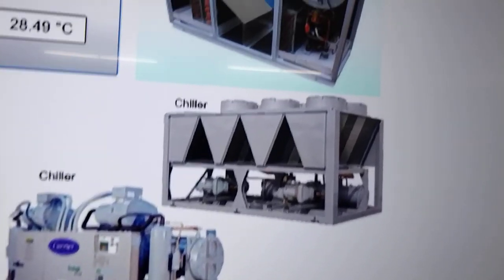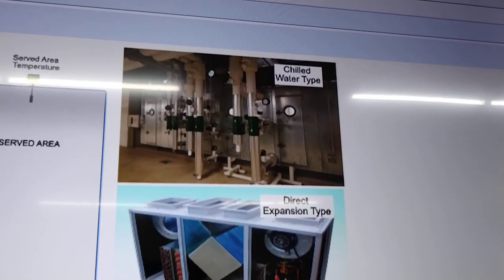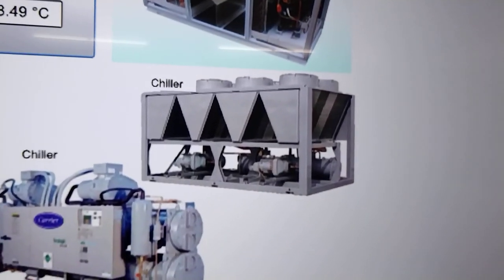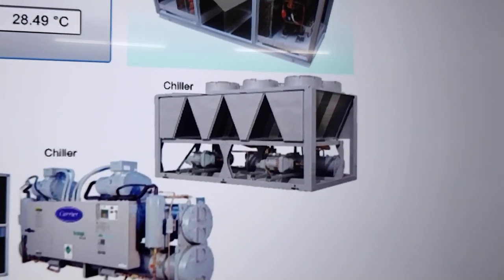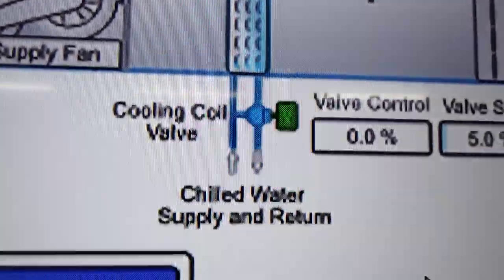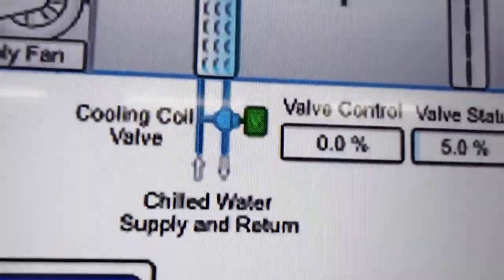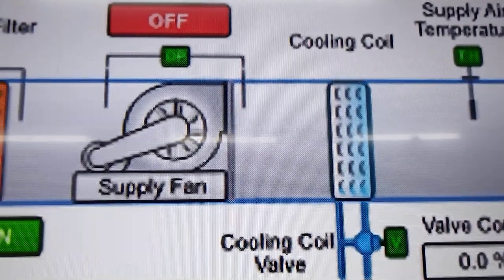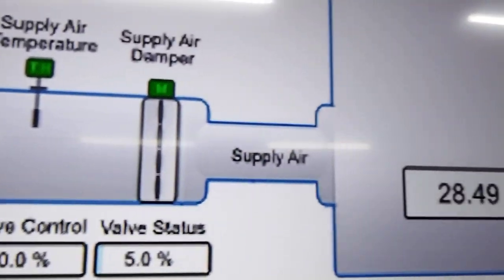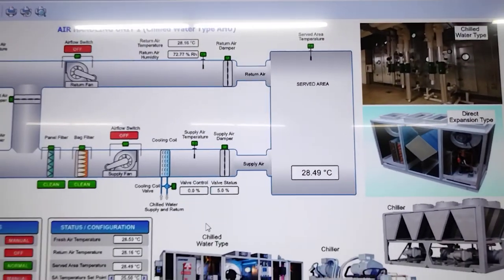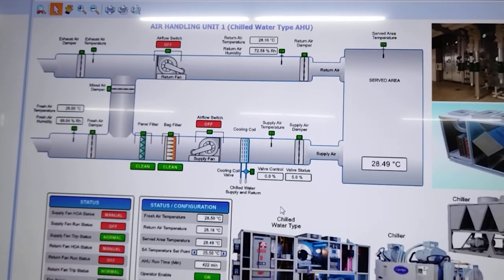We have here our operator enable, time schedule, and run time. These are the typical equipment in the field. This is a chilled water type AHU — a direct expansion type AHU. The chiller is responsible for producing the chilled water needed for cooling the air. The chilled water produced by these chillers will be fed to our cooling coil — chilled water supply and return — and our valve will control the flow of chilled water in the cooling coil, wherein the air will pass through and then be supplied to the area.